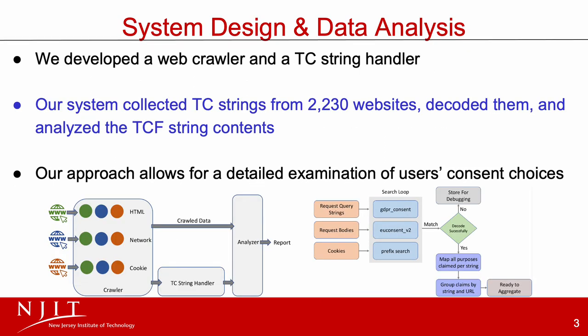Our approach was to crawl 2,230 websites employing TCF to capture TC strings and cookie data. Our crawler declined consent so we could determine if websites accurately recorded our consent choice.